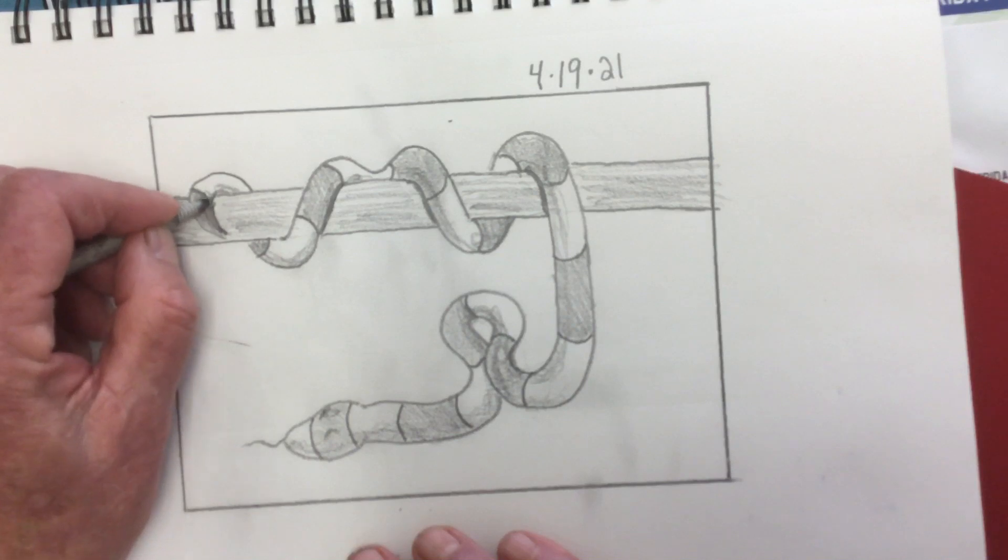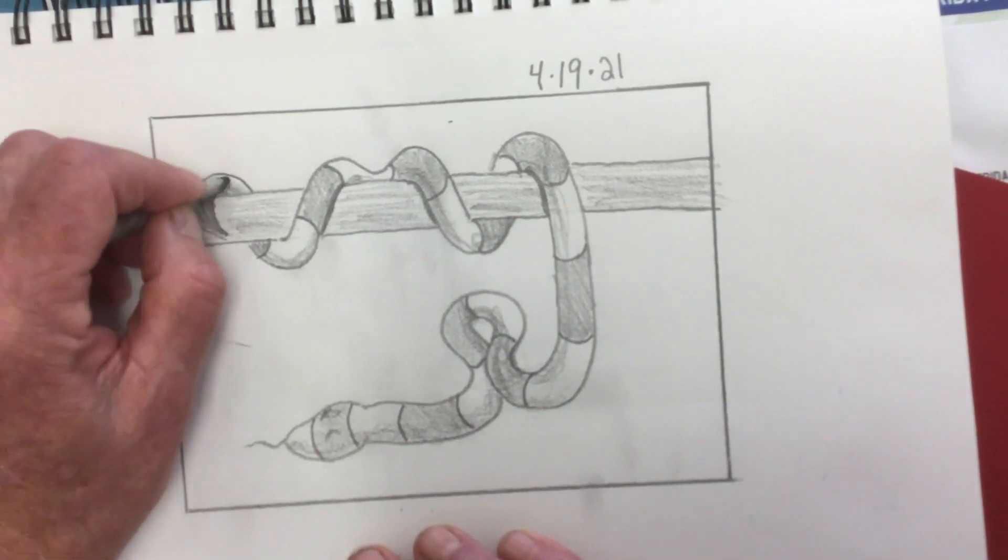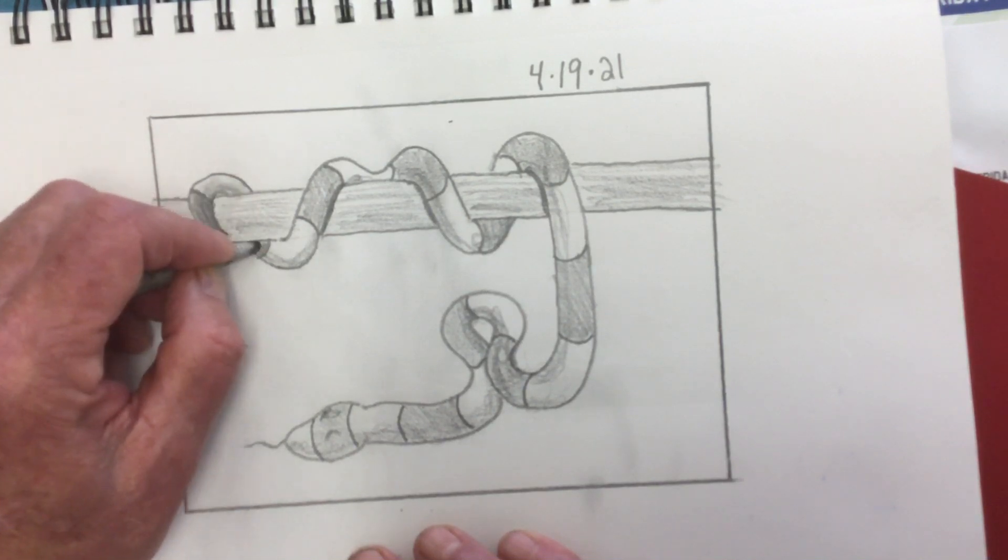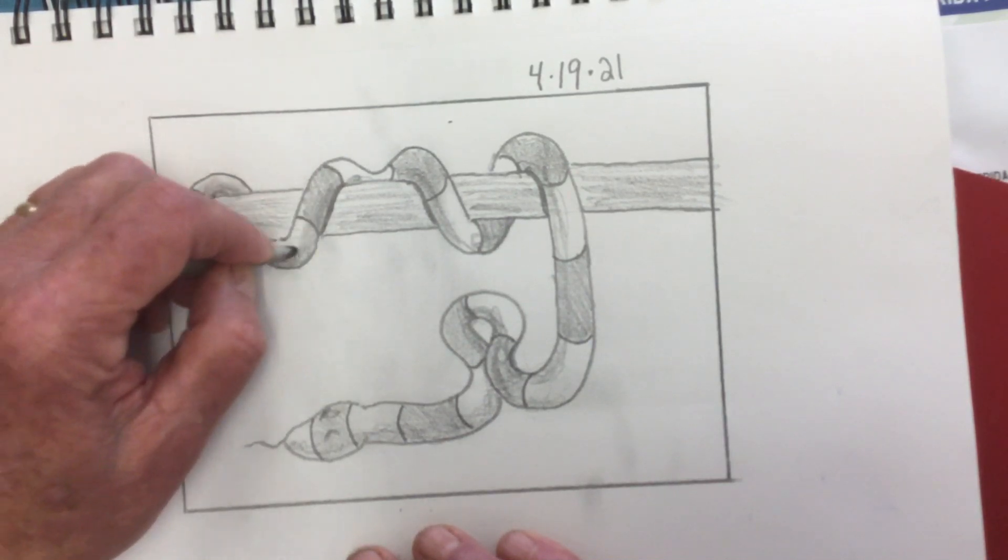Now let me start blending this a little bit, smooth things out. Depending on your pencil, you might be able to just use your finger and smudge it.